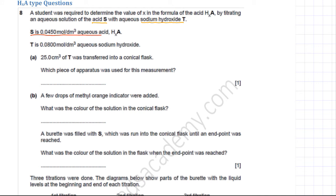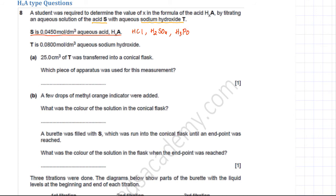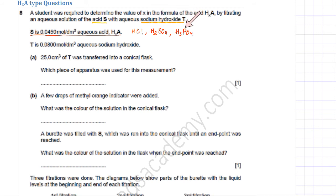S is 0.045 mol per dm³ of aqueous acid HXA, where X is unknown. For example, if X is 1, the acid could be HCl. If X is 2, it could be H2SO4. If X is 3, it could be H3PO4. The A represents any corresponding ion, such as Cl⁻, SO4²⁻, or PO4³⁻. So we want to figure out how many hydrogen ions are in this acid.